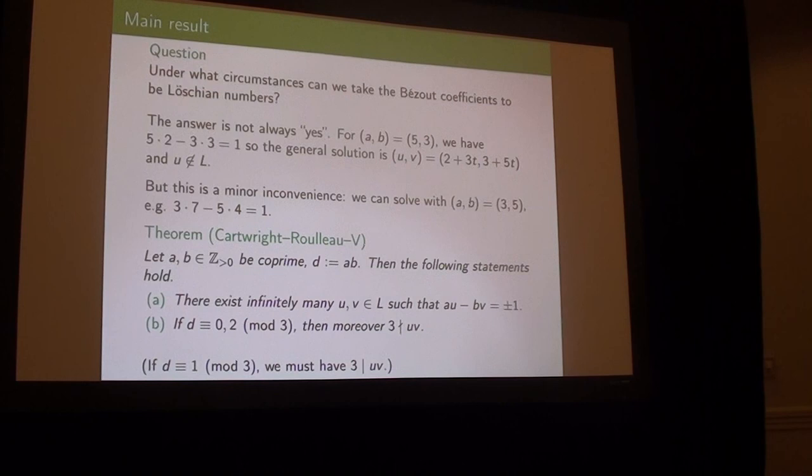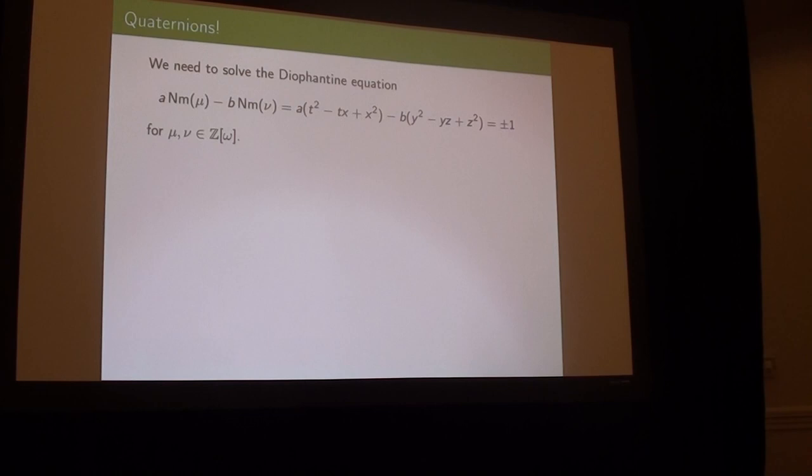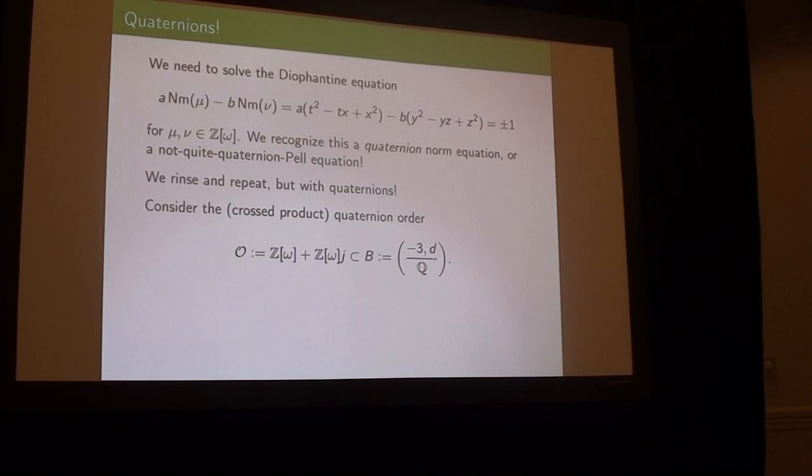The answer is quaternions - the answer is always quaternions, no matter what the question was. What kind of equation do you get if you ask for U to be the norm of μ and V to be the norm of ν? Instead of A² - B² = ±1, now we have four variables because they come from each of the coordinates. Do you recognize this as the non-commutative analog of the quadratic thing we saw earlier? It's a quaternion norm equation - a not-quite-quaternion-Pell equation. Scale through by A, and we'll end up with conditions on divisibility.